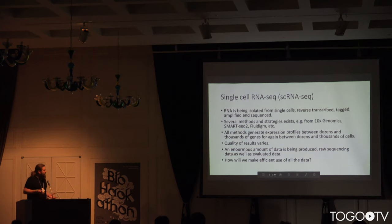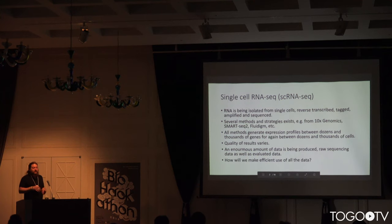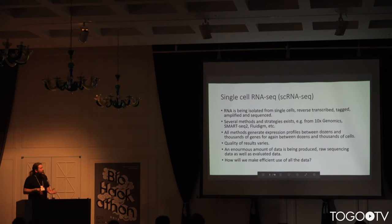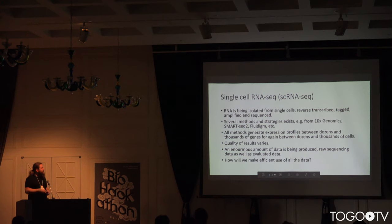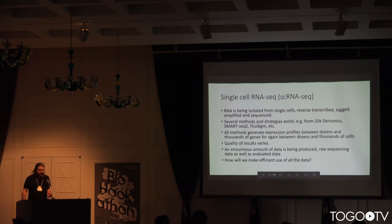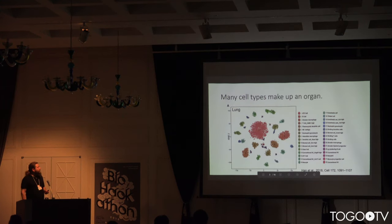You end up with enormous amounts of data. The quality of results varies — some methods produce reliable and good results, others less so. You end up with a large amount of raw sequencing data, as well as processed and evaluated data. So how will we be able to make efficient use of all this data? That's the question I'd like to answer with this ontology.